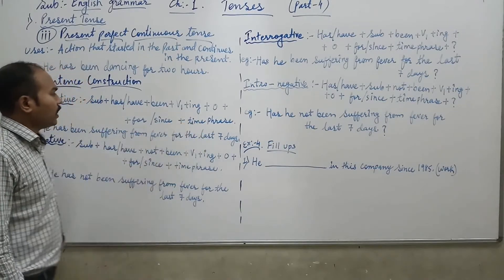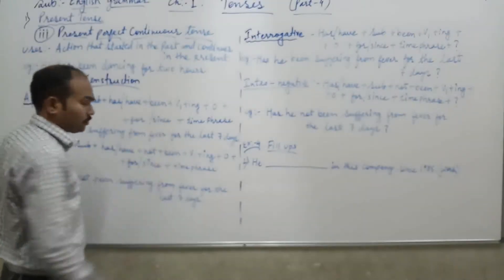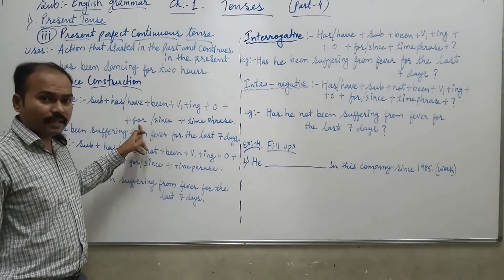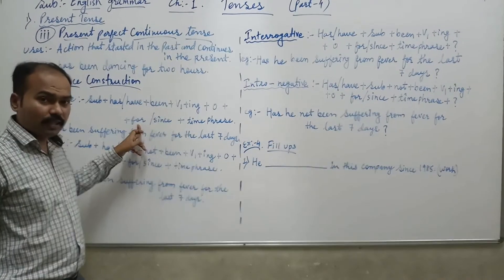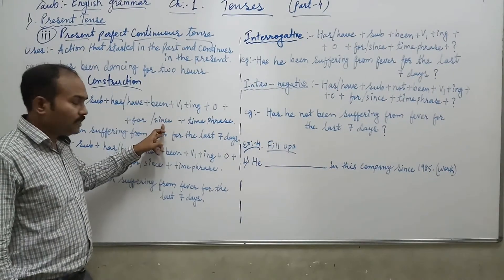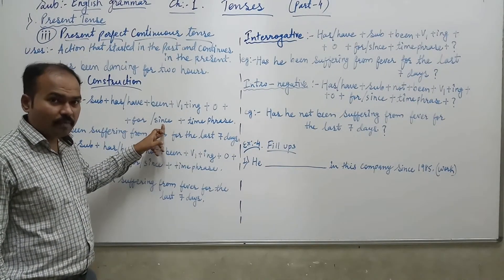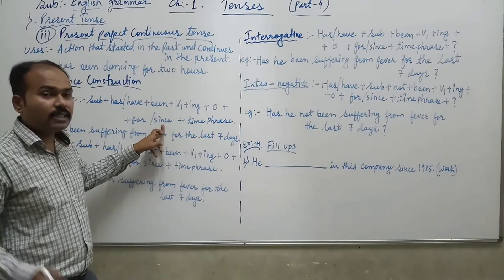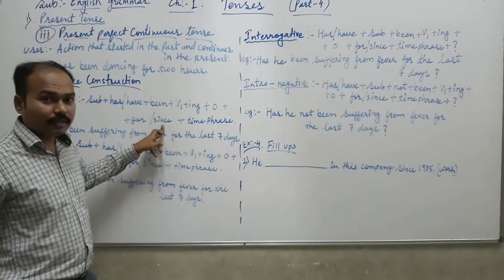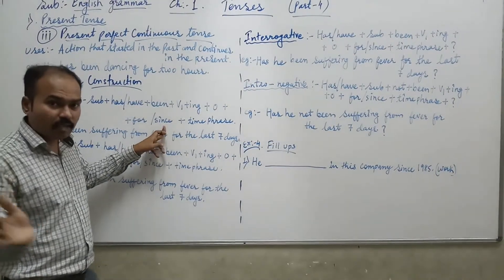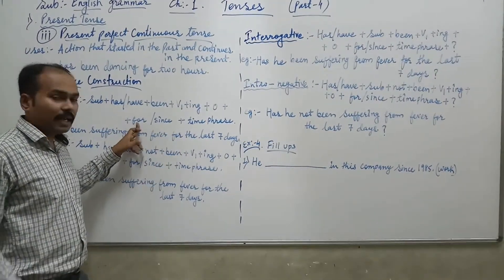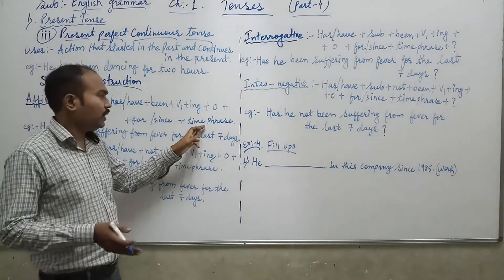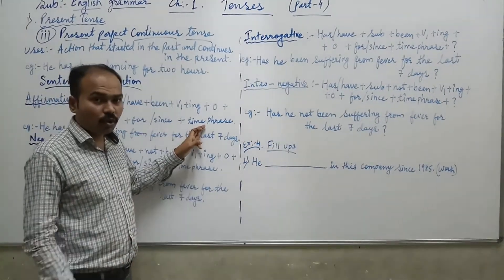Now you can see for and since, this is how to use for and since. For, we use to show the period of time, matlab kitne samay ke liye, for one month, for two years, and so on. Since, we use starting point of time, matlab kab se shuru huwa hai, since 2001, since Monday or Sunday. In this way, since aapko batata hai starting point of time of action, or for aapko batata hai period of time, kitne samay ke liye action.